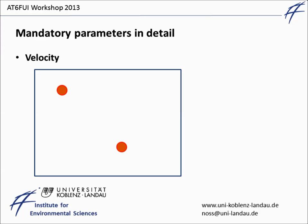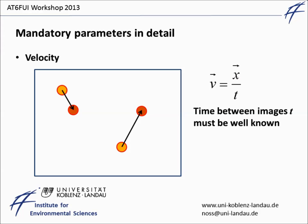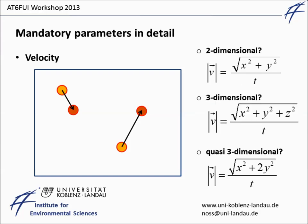The last parameter, the swimming velocity, corresponds simply to the displacement of an individual recorded in a unit of time. This time is usually given by the time between images; however, the time span must be very well known and should ideally be constant. The second task regarding velocity determination from images is the question of whether it is sufficient to compute the velocity only two-dimensionally, or whether it is necessary to observe all three components of the position vectors. In our case of freely swimming Daphnia, we noticed an isotropic horizontal swimming behavior; hence quasi-3D velocities could have been computed using only two of three components.